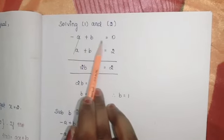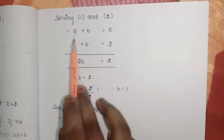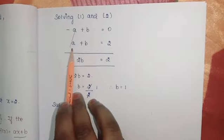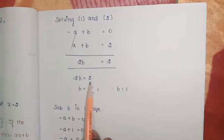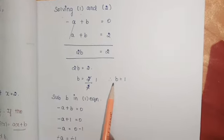Solving equations 1 and 2: -a + b = 0, a + b = 2. Adding these, -a and +a cancel. b + b = 2b = 2. Therefore b = 2/2 = 1.